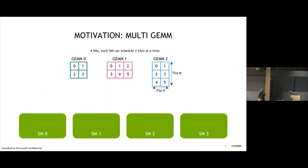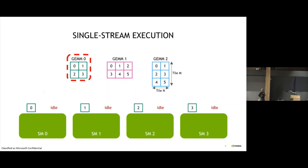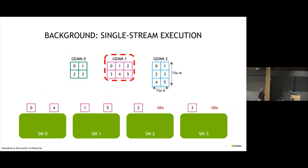The single stream execution model works as follows: we pick a GeMM, take all the tiles, and try to schedule them on the different SMs. In this case we have four tiles and they go horizontally, and each SM is idle. Then we go to the next one and distribute those across — tiles 0, 1, 2, 3 go, then 3, 4, 5 — and the last two SMs, 2 and 3, are idle.